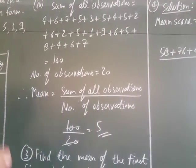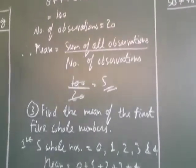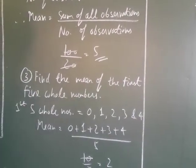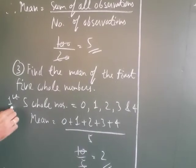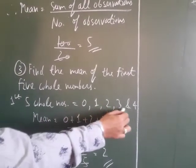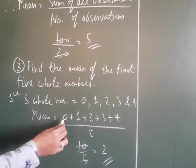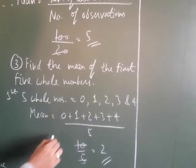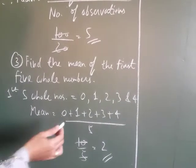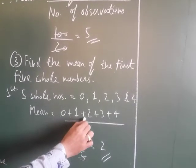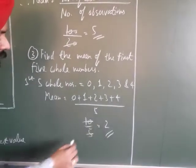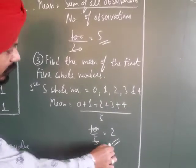Third question: find the mean of the first 5 whole numbers. Whole numbers start from 0, so the first 5 whole numbers are 0, 1, 2, 3, and 4. Mean = sum of all numbers divided by number of numbers = (0+1+2+3+4) divided by 5 = 10 divided by 5 = 2.